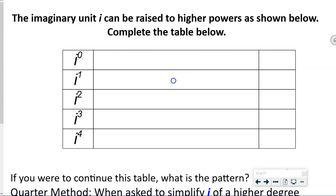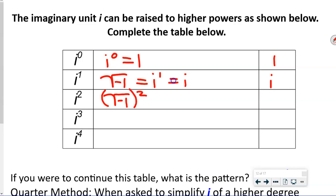Now we're going to complete a table for powers of i. The imaginary unit i can be raised to higher powers. i to the 0 power is 1 — anything to the 0 power is 1. i to the first is just i, which is the square root of negative 1. i squared means square root of negative 1, all squared — the square root cancels the square — so we get negative 1. i to the third is i squared times i, which is negative 1 times i, giving us negative i.